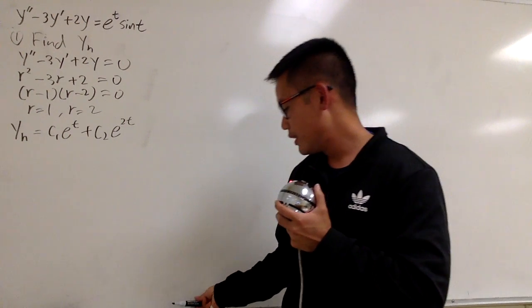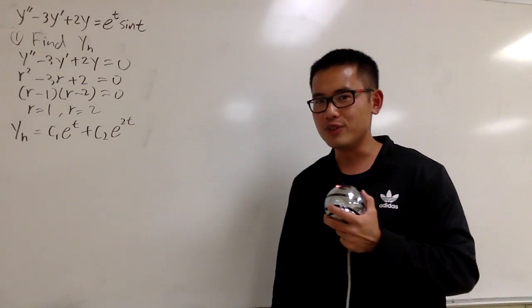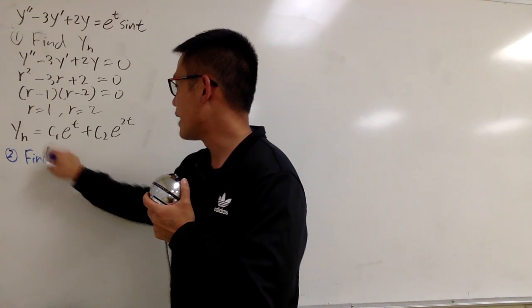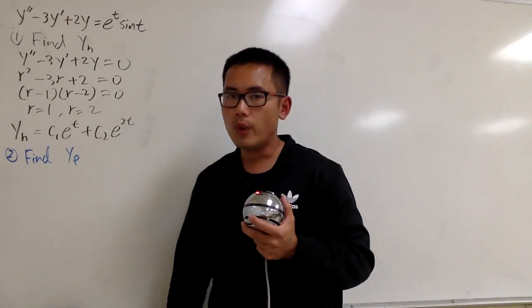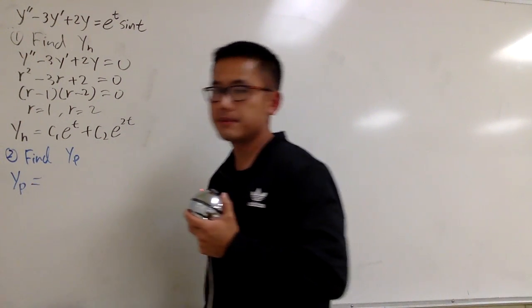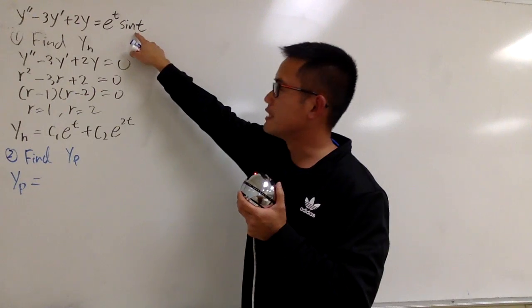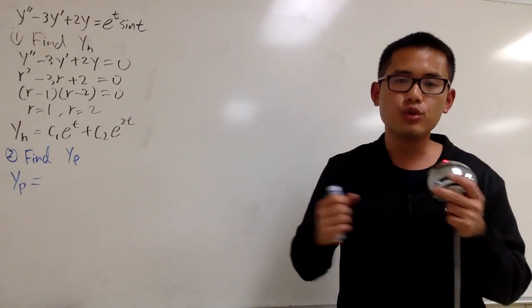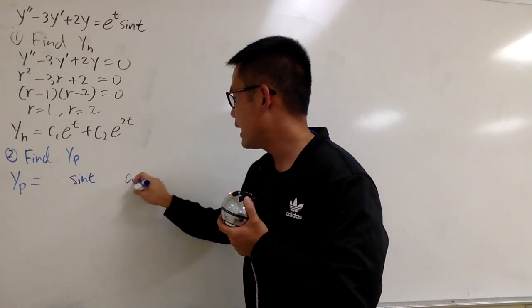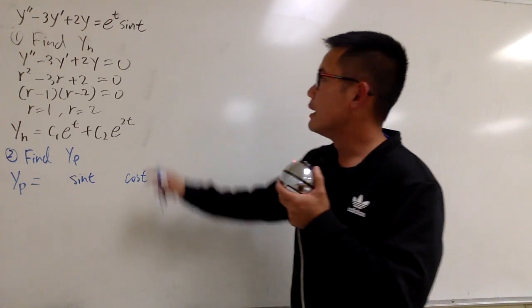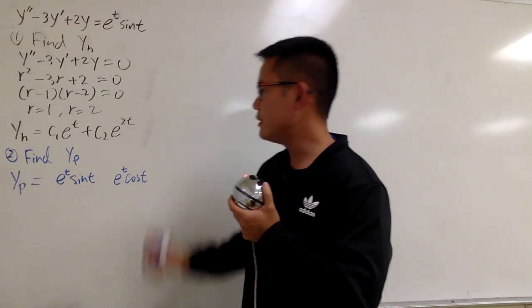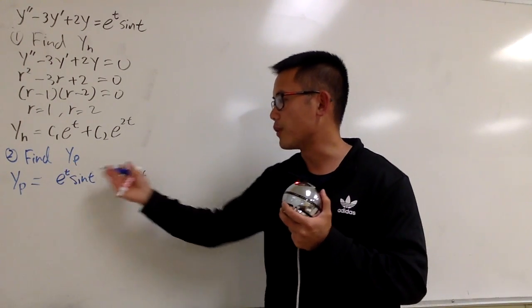Now we are going to use the method of undetermined coefficients to find yp for the particular solution. That's step two. Well, yp depends on what kind of function we have on the right-hand side. Whenever you have sine — in this case sine t — we must have cosine t to help us out as well. So based on sine t, I will put down sine t and cosine t, and this is being multiplied by e^t, so right here I will have to multiply by e^t for both terms.